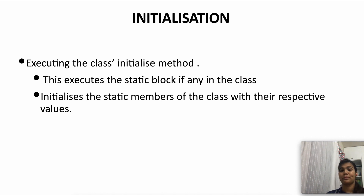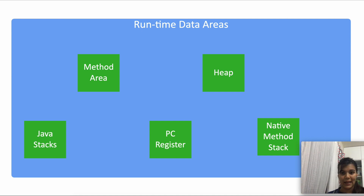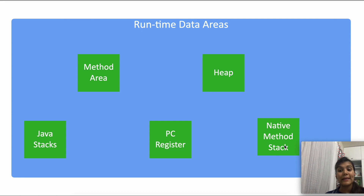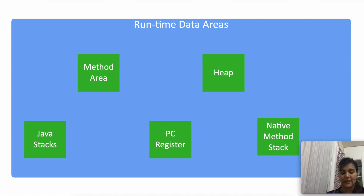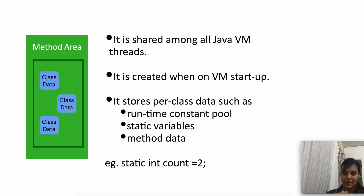Moving on, the runtime data areas are the runtime memory in which all the various components of a class are allocated. There are five areas in total. Two of them — the method area and the heap — belong to the JVM: they are created when the JVM starts execution and destroyed when the JVM exits. The remaining three — the Java stacks, the PC register, and the native method stack — are created when a thread is created and exit when the thread exits. First we'll discuss the method area, which is shared among all JVM threads.